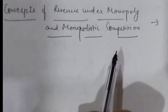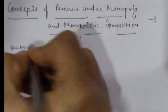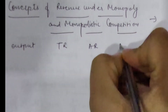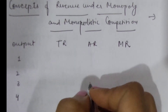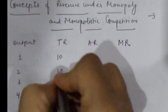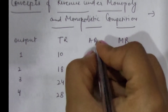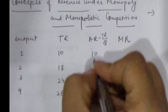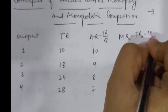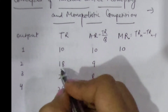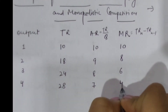Now coming to concepts of revenue under monopoly and monopolistic competition. Taking a table with output, total revenue, average revenue, and marginal revenue — if we are selling one, two, three, and four units of output, total revenue increases but at a decreasing rate: 10, 18, 24, and 28. Average revenue, which is total revenue divided by output, is 10, 9, 8, and 7. Marginal revenue is 10, 8, 6, and 4.